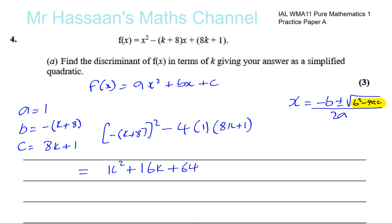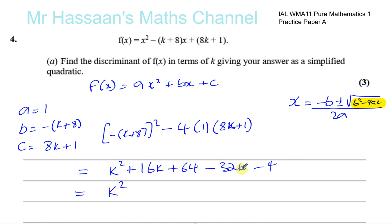The minus squared becomes positive, and k plus 8 times k plus 8 gives k squared plus 16k plus 64. Then we have minus 4 times 8k, which is minus 32k, and minus 4 times 1, which is minus 4. Collecting like terms: k squared is on its own, 16k minus 32k gives minus 16k, and 64 minus 4 gives plus 60. So the discriminant of f of x is k squared minus 16k plus 60.